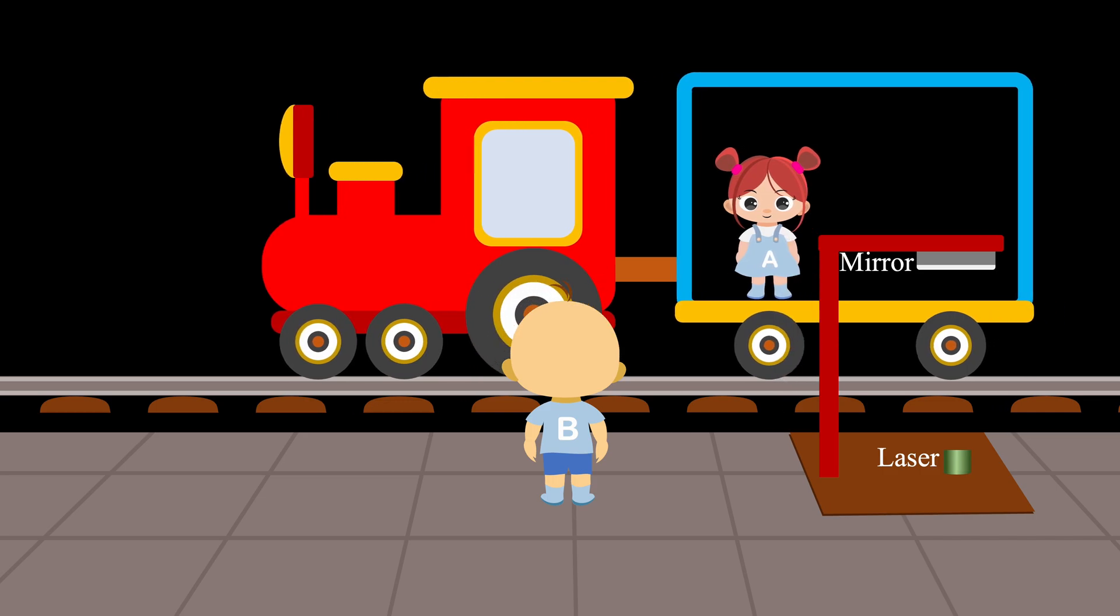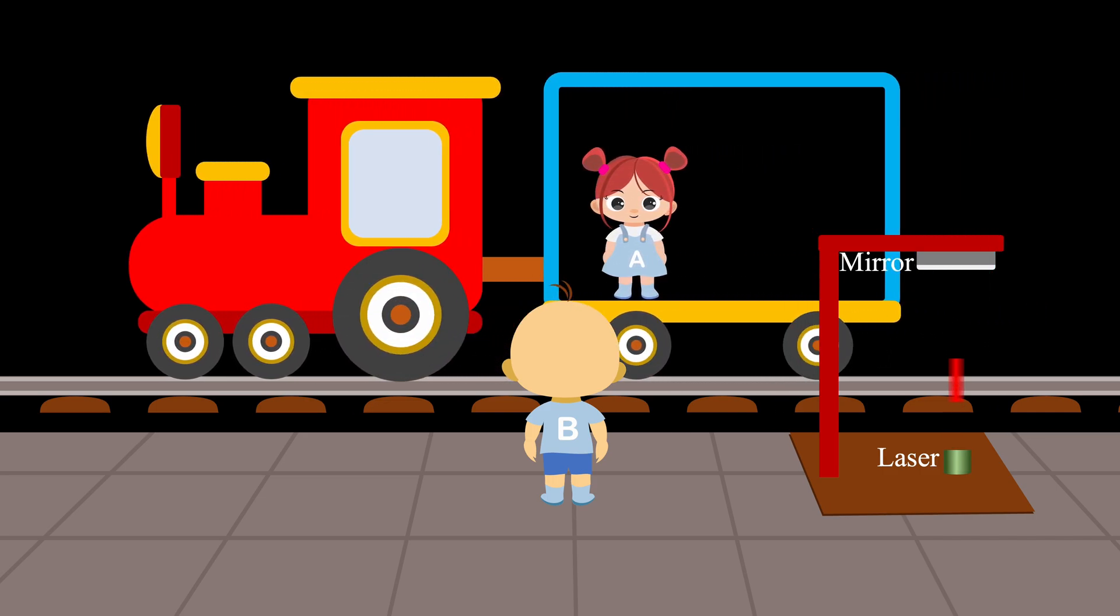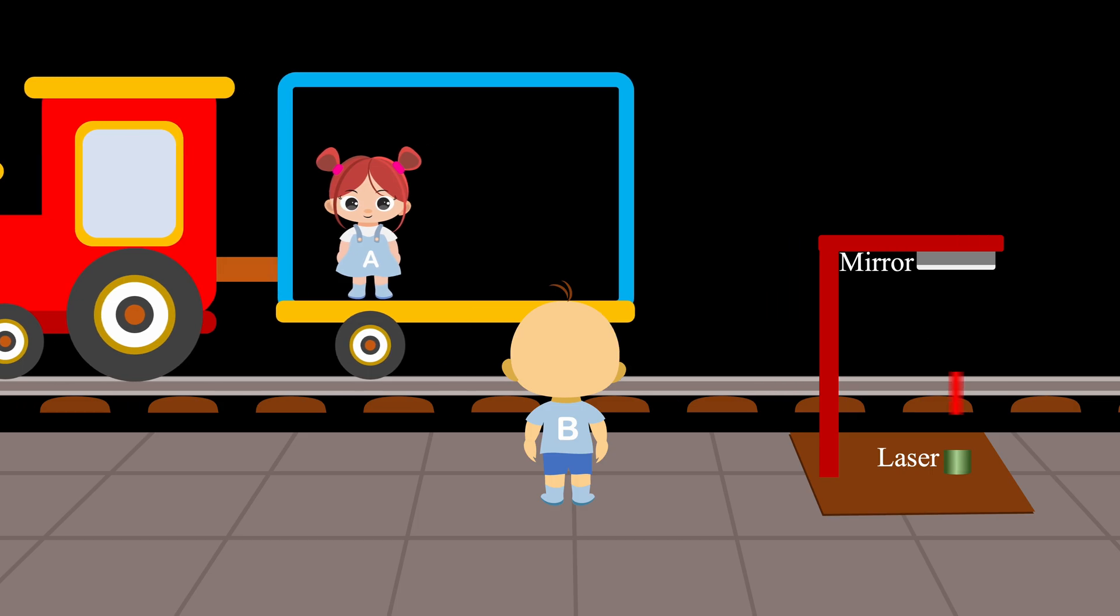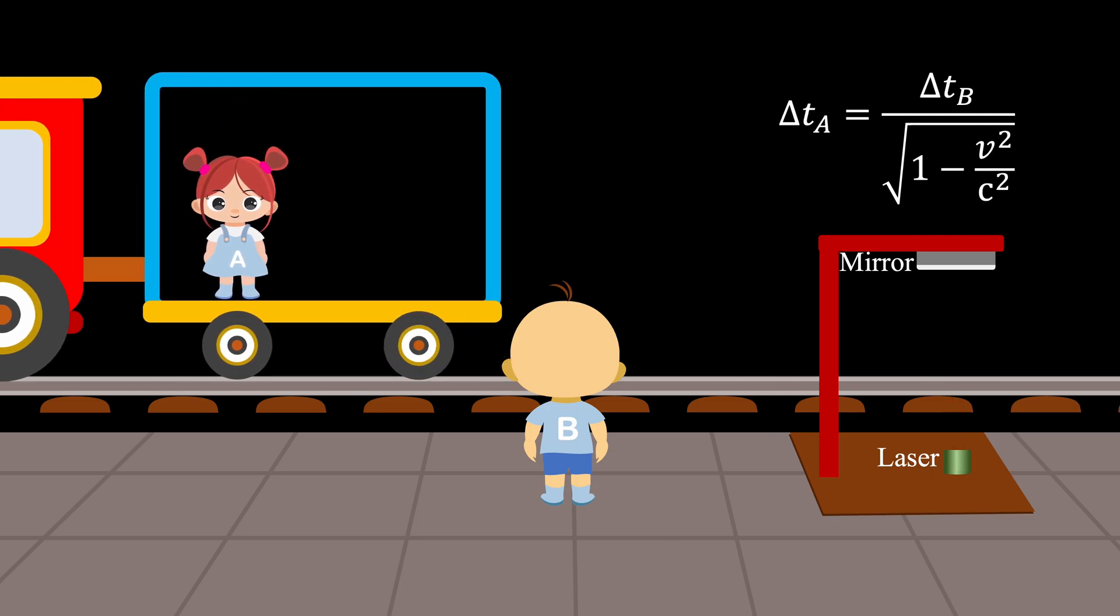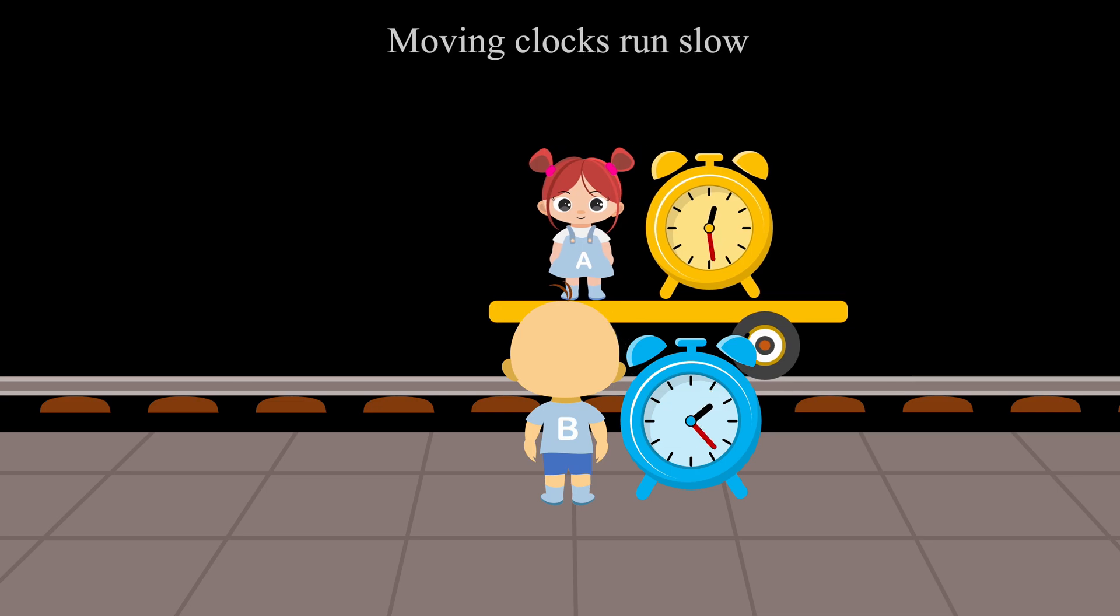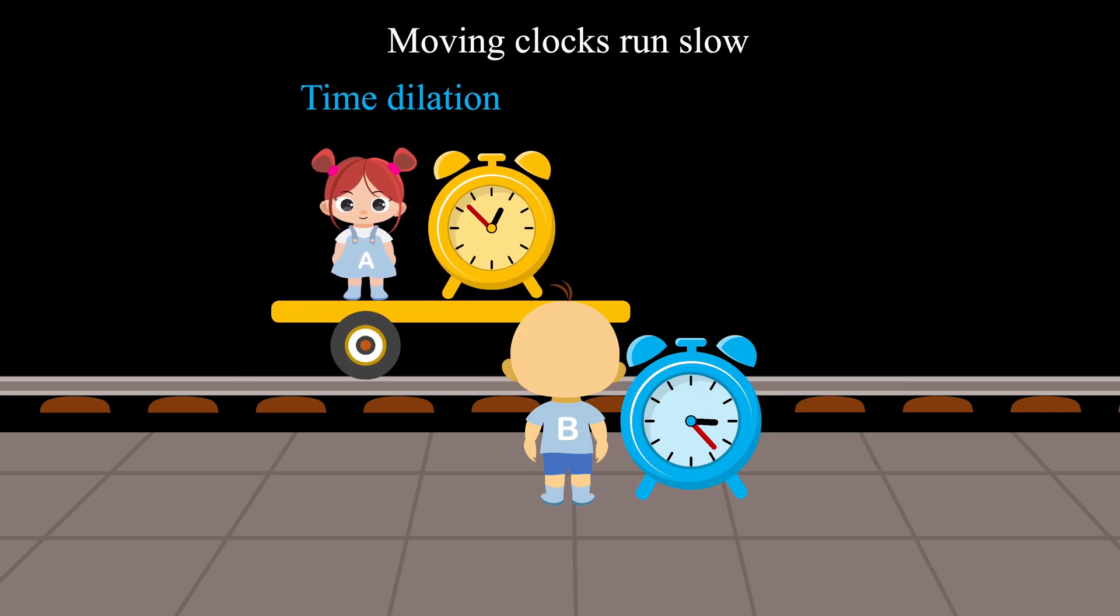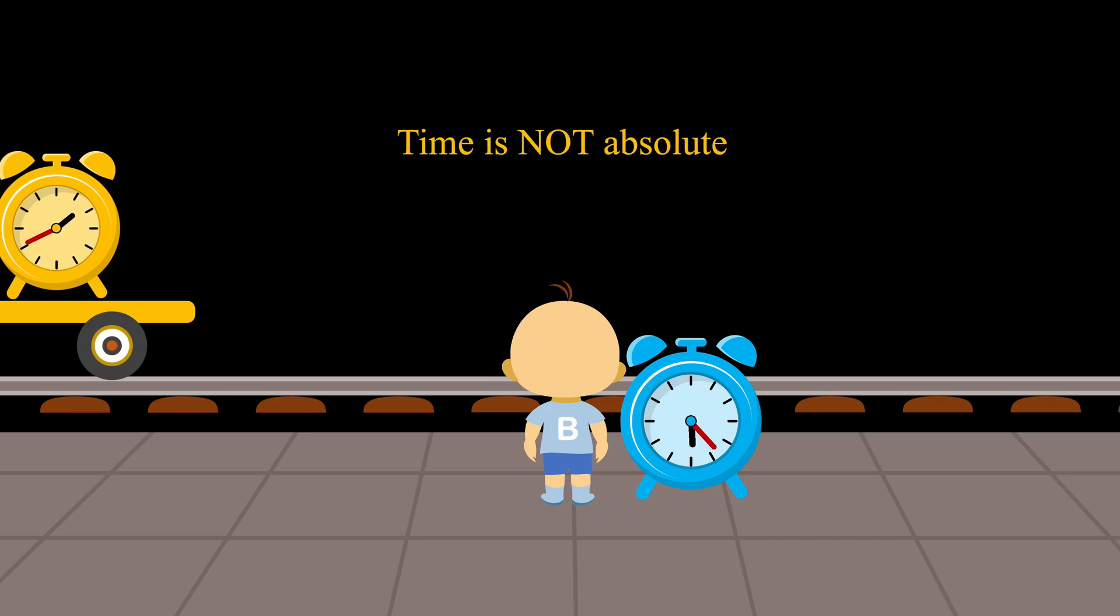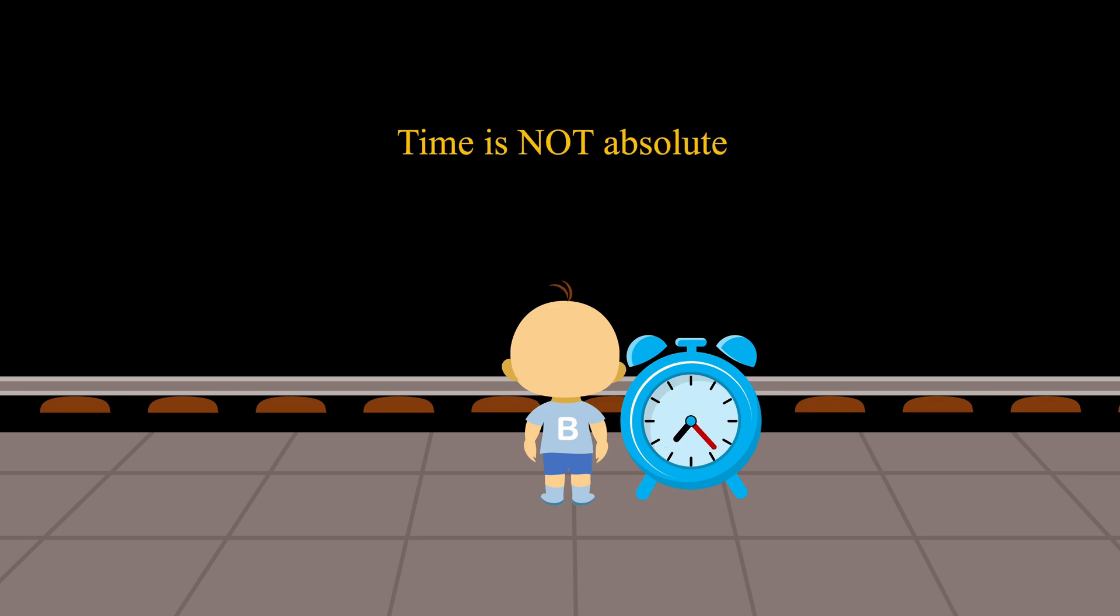If the laser and mirror were fixed in Bob's frame instead, the principle of relativity ensures that Alice would record longer time than Bob. This reveals that moving clocks run slow, a phenomenon known as time dilation. Thus, time is not absolute, but depends on an observer's motion. It is a consequence of the constancy of the speed of light.